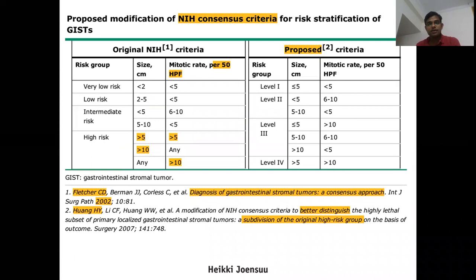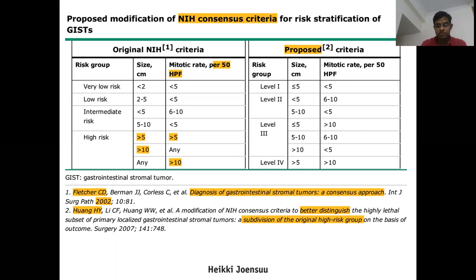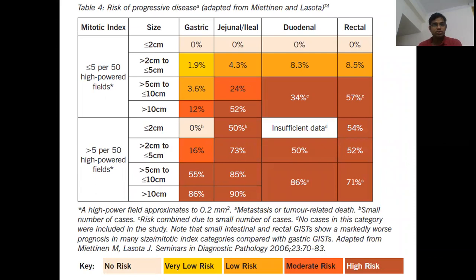To prognosticate, in the early 2000s the NIH consensus criteria were developed, based on tumour size and mitotic rate per 50 high-power fields. However, quite a few factors were not included — including tumour site and tumour rupture — creating the need for other prognostic systems. This was followed by AFIP scoring, which included site of disease, but rupture was still not included. A problem also exists because mitosis is not continuous: a patient with 5 per 50 HPF ileal GIST versus 6 per 50 HPF can have disparate outcomes of 24% versus 73% — this is the problem with dichotomous variables.